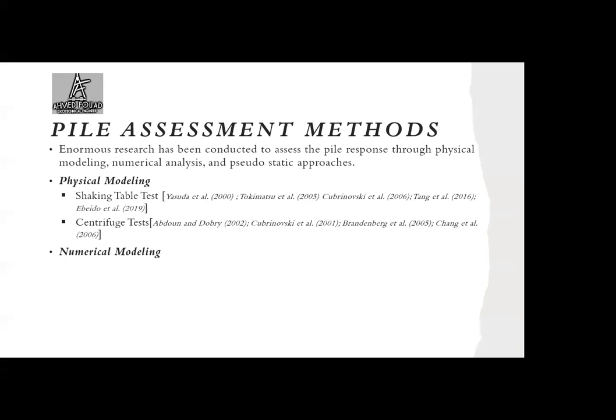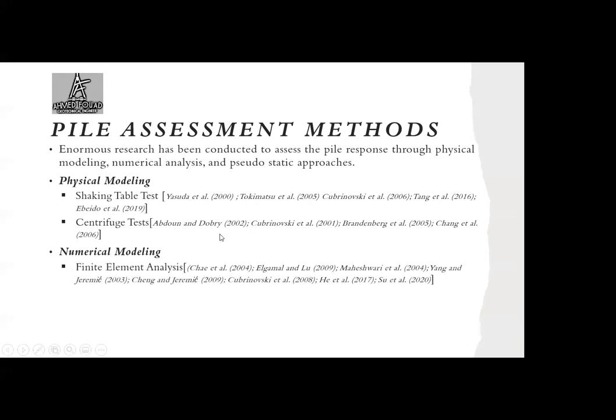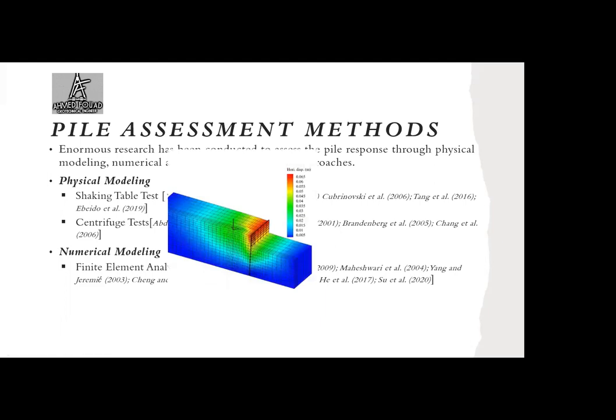To study different parameters more affordably, we use numerical modeling. Once a physical model is calibrated and validated, numerical modeling can simulate soil-pile-structure interaction and measure parameters not easily obtained from physical tests — such as lateral displacement, vertical displacement, and straining actions in the pile via finite element analysis. A key advantage is the ability to conduct parametric studies varying soil parameters, structural element properties, or strengths.